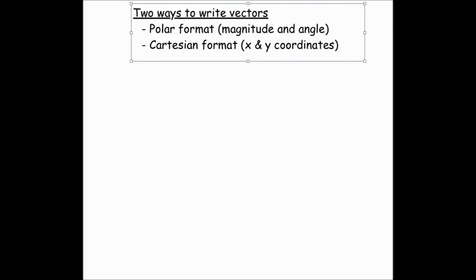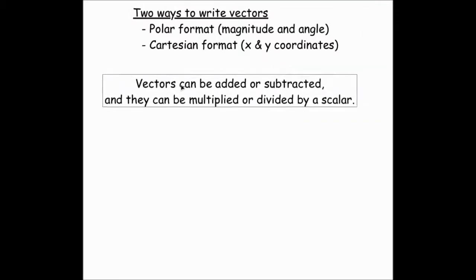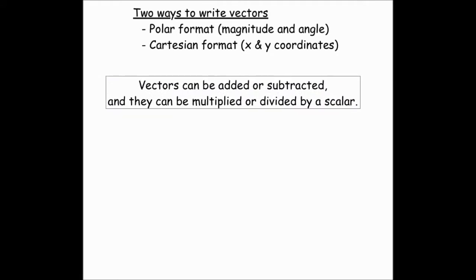Cartesian has an x and a y coordinate. So mathematically, vectors can be added or subtracted, or they can be multiplied or divided by a scalar. So when we say scalar, what we mean is a variable that does not include a direction.